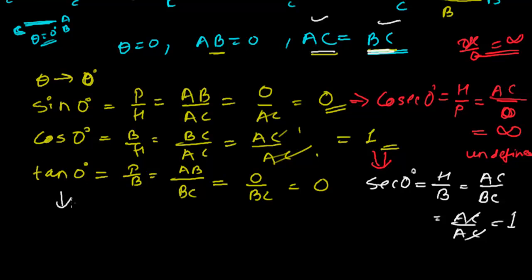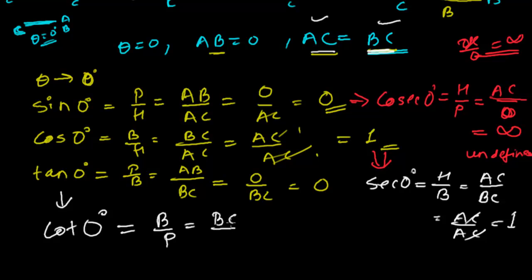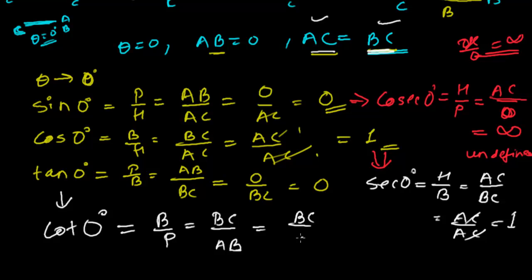Now let's find out the value of cot zero. Cot zero equals B upon P. Base is BC and perpendicular is AB. AB is zero, so BC upon AB equals BC upon zero. Something upon zero is infinity — that's undefined. So cot zero degree is undefined.